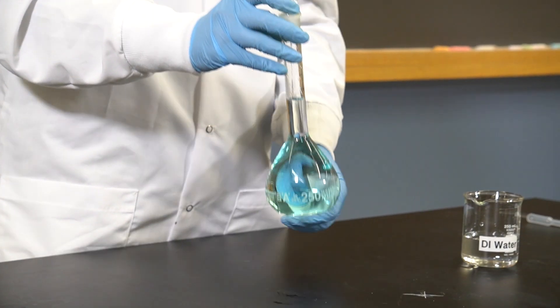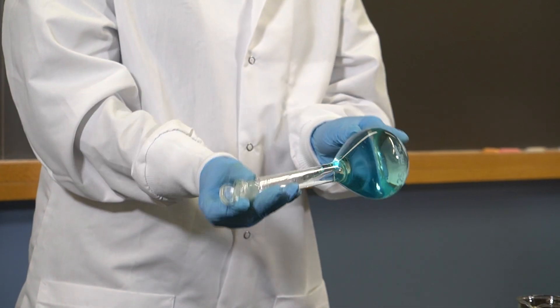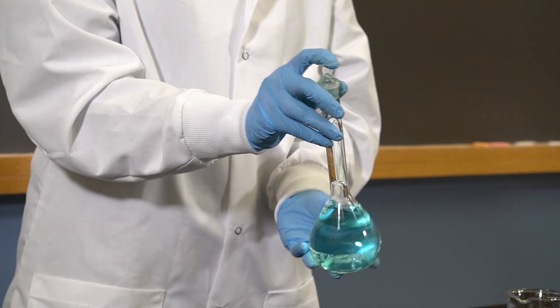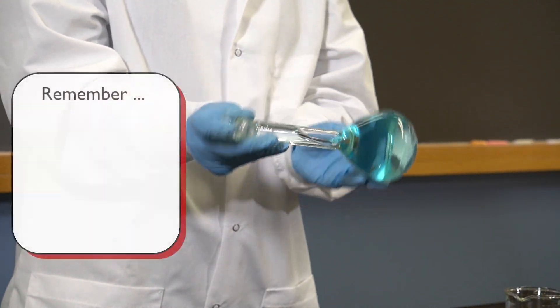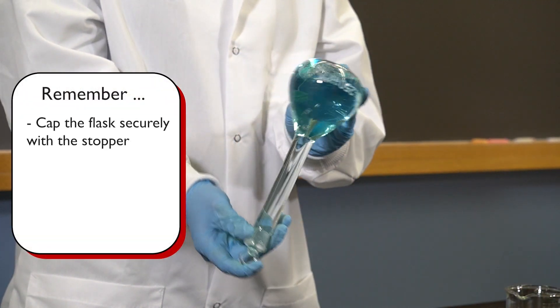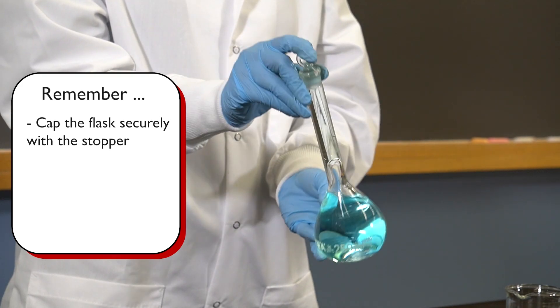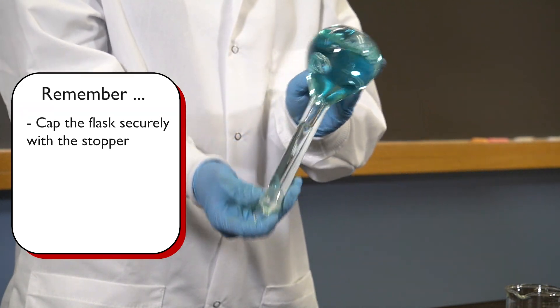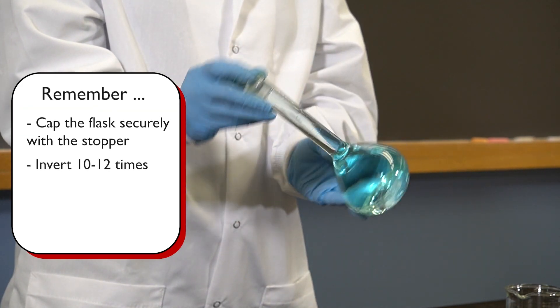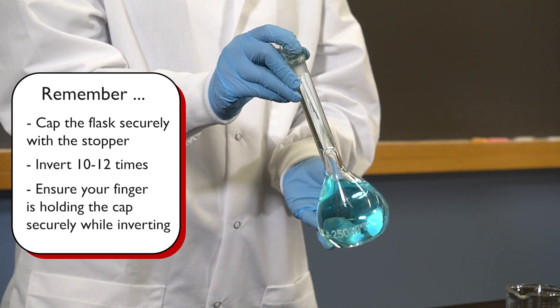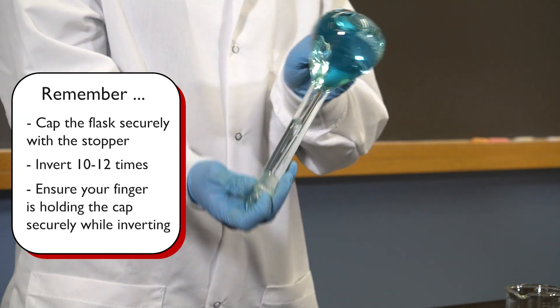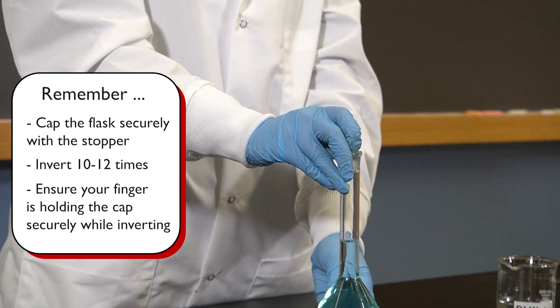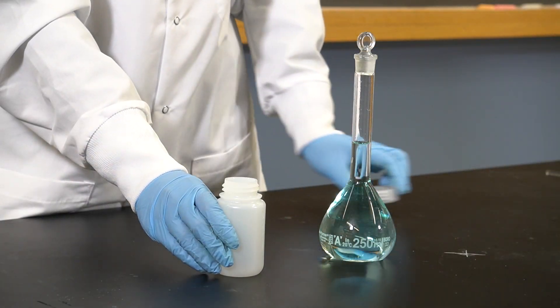Now that we have the correct amount of solute and solvent in the flask, we can go ahead and mix the solution to make it uniform. To do so, cap the flask securely with the stopper. Mix the solution thoroughly by inverting it 10 to 12 times. Make sure your index finger is holding the cap in place during this process. At this point, we have finished preparing the solution.